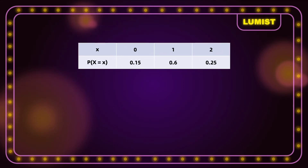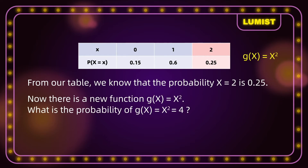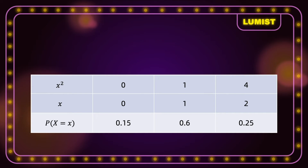Now let's consider a trickier situation using the same probability distribution. We take the function g(x) = x². From our table, the probability that x = 2 is 0.25. When working with g(x) = x², the probability that x² = 4 is still 0.25. It's important to note that no matter how we scale or shift x, the probability of x taking a given value will always be the same.